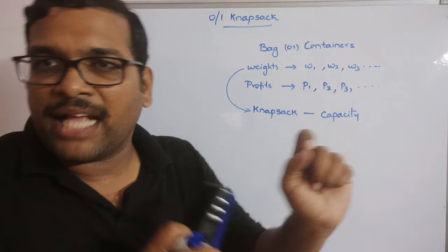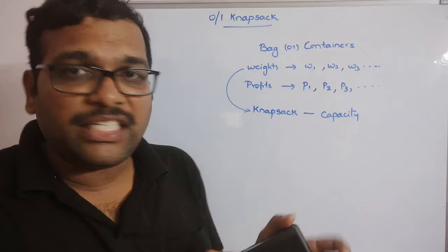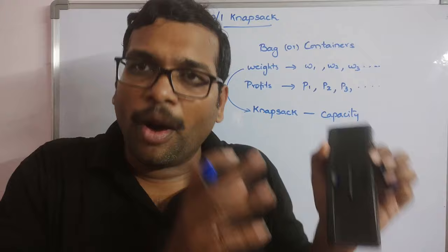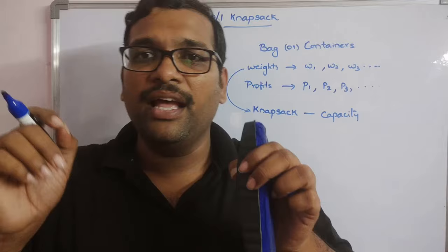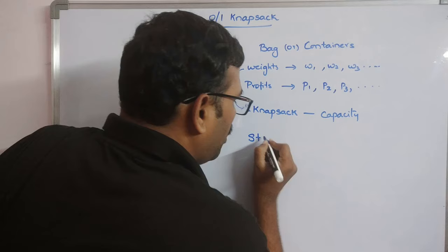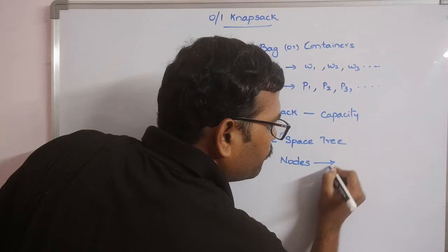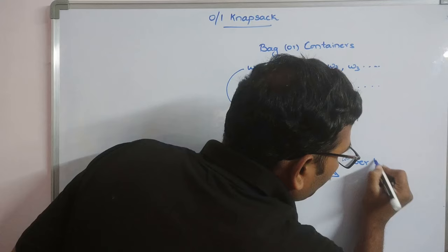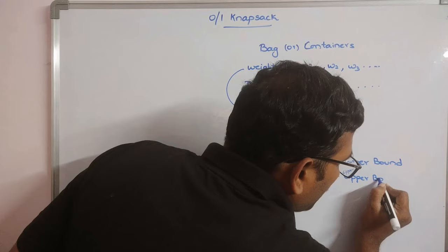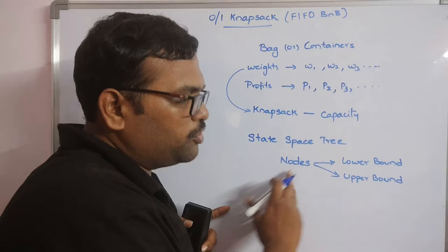We have to solve this using branch and bound - FIFO branch and bound. In this approach we draw a state space tree to find the optimal solution. Some solutions will be infeasible, so we'll eliminate those and get only the optimal solution by expanding each node of the state space tree. At every node we are supposed to calculate two things: lower bound and upper bound.